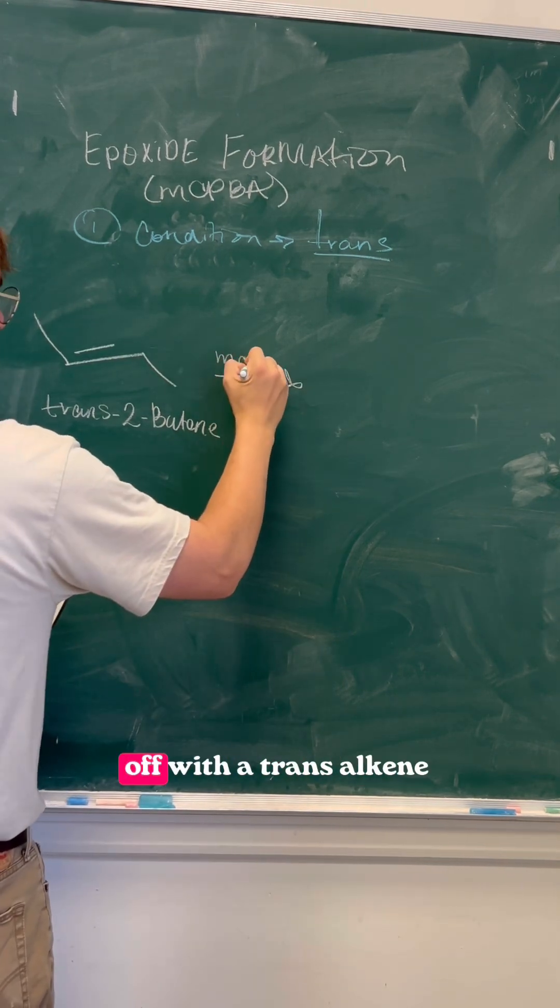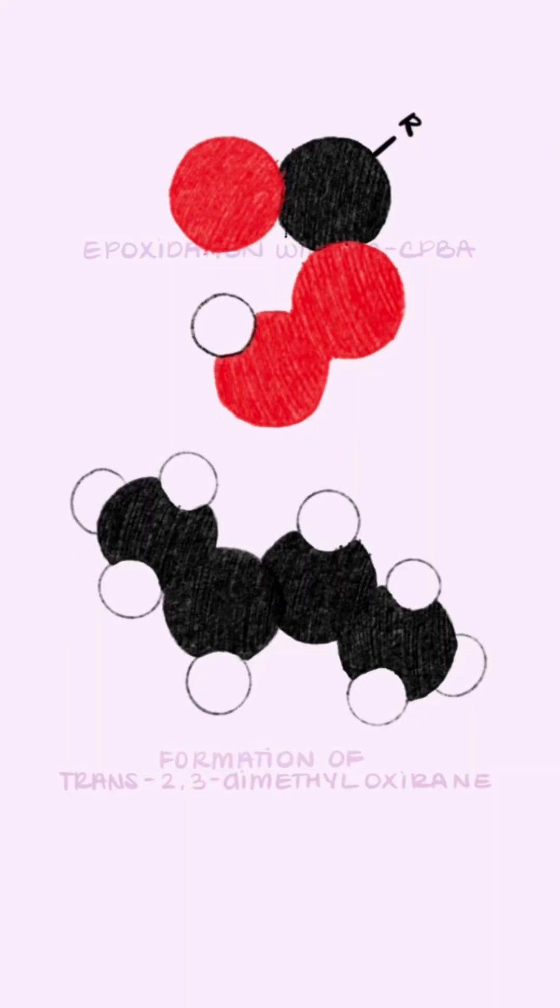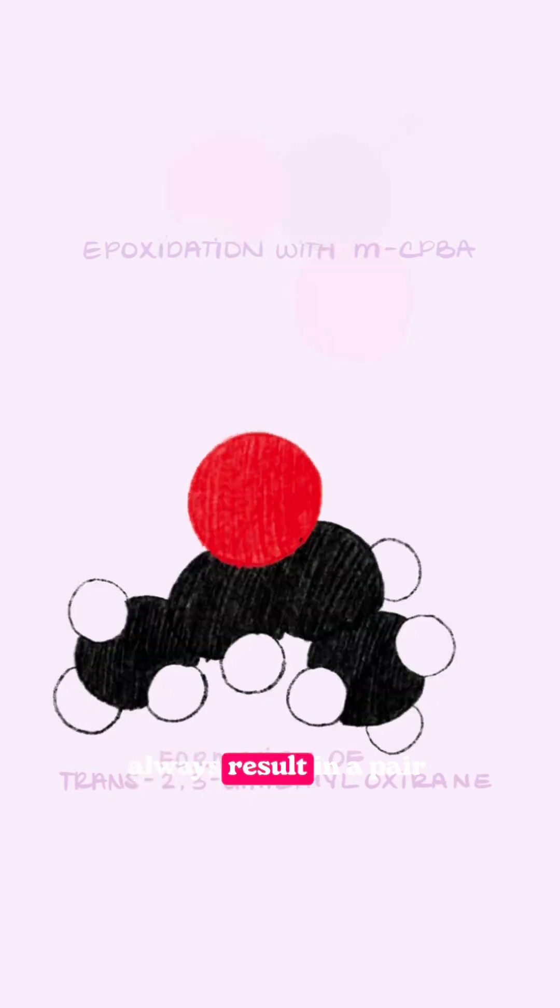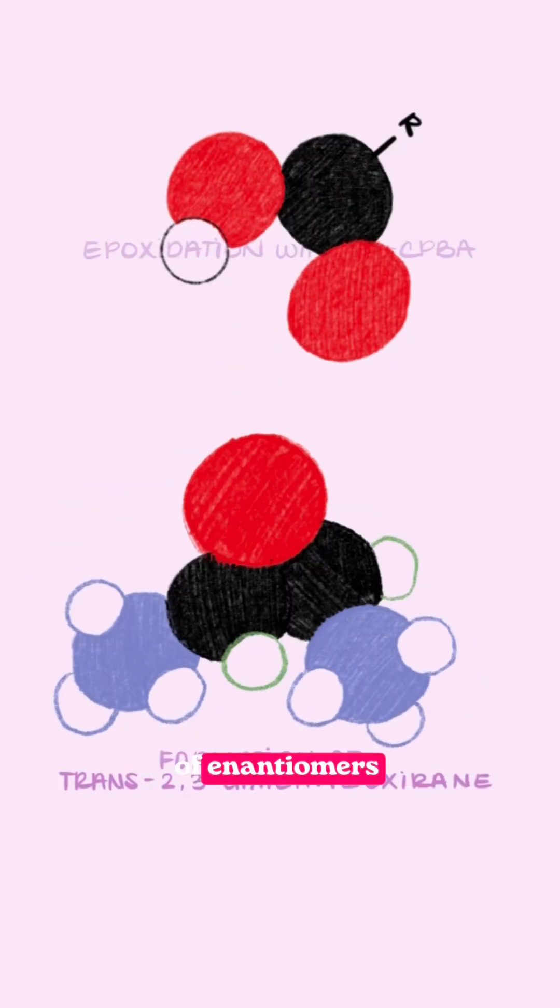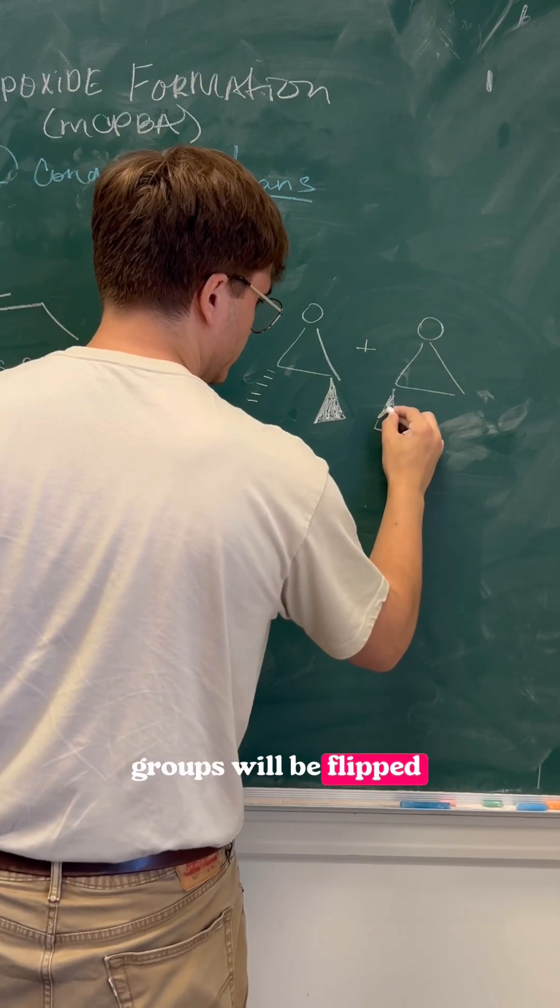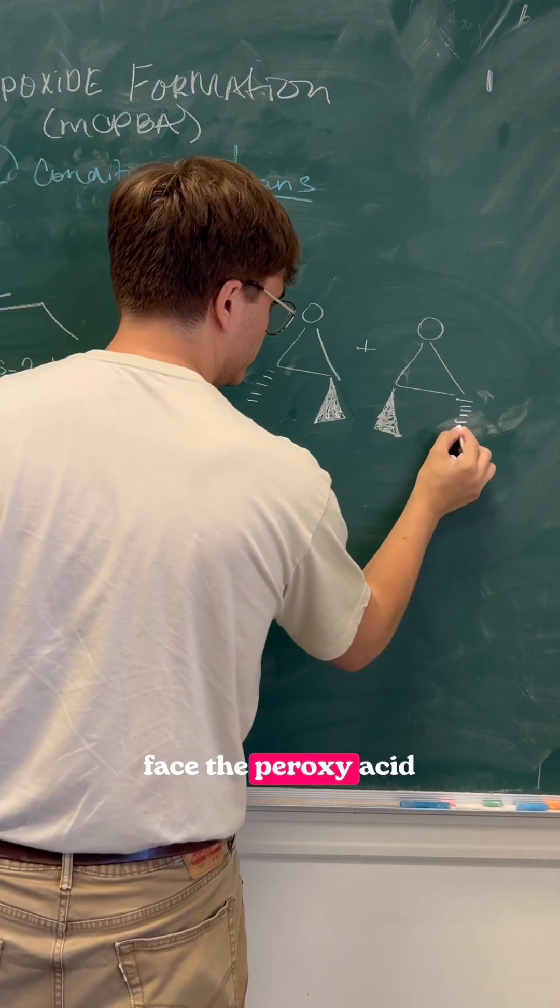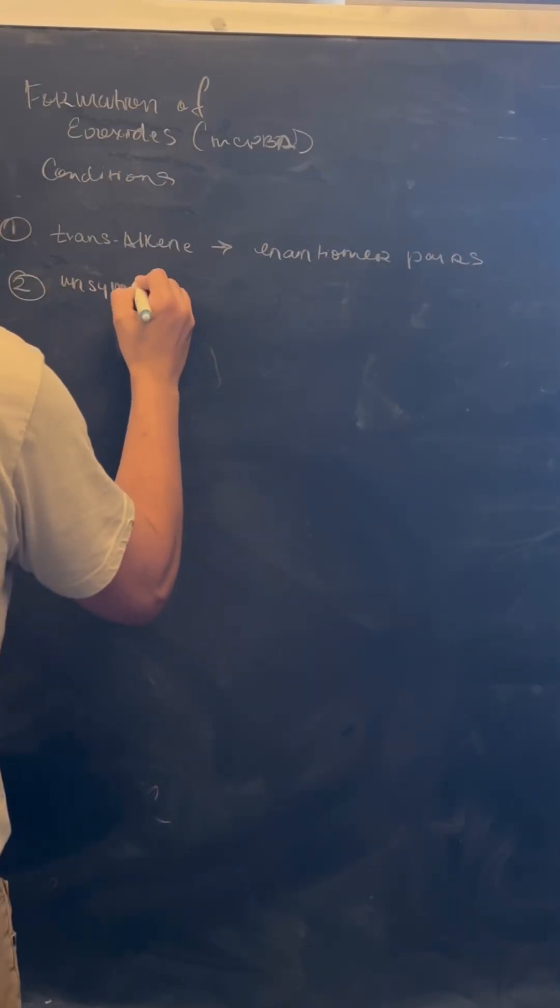First, let's start off with a trans alkene. These reactions will always result in a pair of enantiomers, since the spatial arrangement of the groups will be flipped depending on the face the peroxy acid reacts with the alkene.